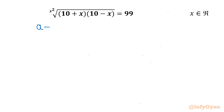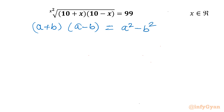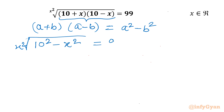The identity is (a plus b)(a minus b) equals a squared minus b squared. Let's apply this property here: (10 plus x)(10 minus x) is of the form (a plus b)(a minus b). So I will write x times the square root of 10 squared minus x squared, equal to 99. Now I can write 10 squared as 100 minus x squared, and the power will be 1 over x squared. Right hand side is 99.